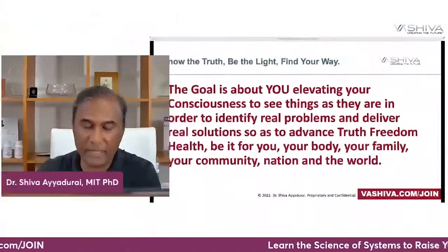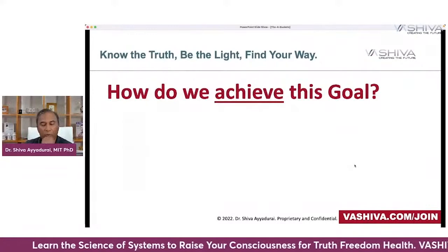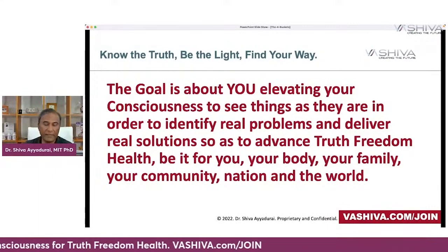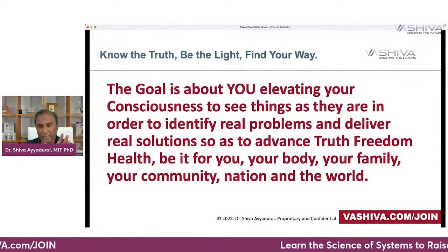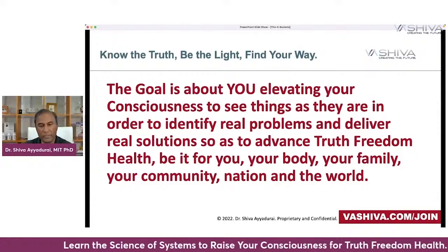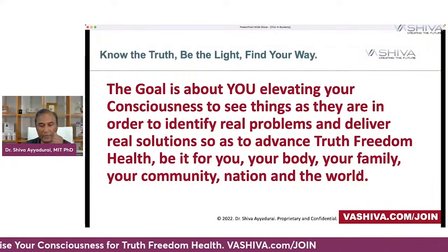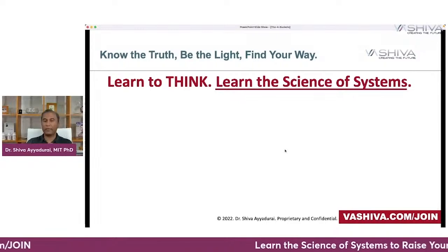How do you elevate your consciousness to see things as they are? The goal is to see things as they are in order to identify real problems and deliver real solutions so as to advance truth, freedom, and health — for you, your body, your family, your community, your nation, and the world. We're really trying to connect heaven and earth here. Number one: you have to learn to think, and in order to do that, you have to learn the science of systems.